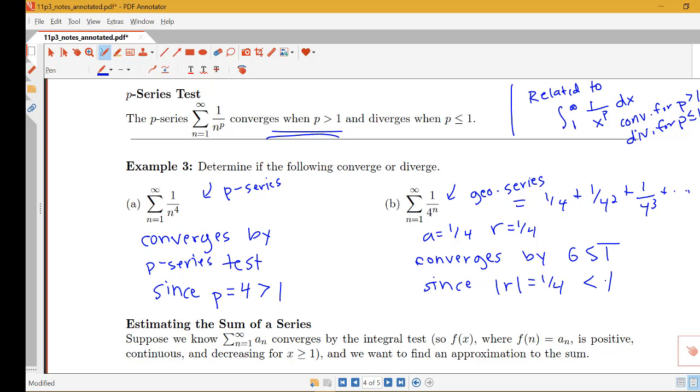So just reminding you how the work goes for applying the geometric series: we're saying the test name, we're saying whether it converges or diverges, and then we're stating what our r value is and that the absolute value of r in this case is in fact smaller than 1 which is the condition required for convergence when using the geometric series test.